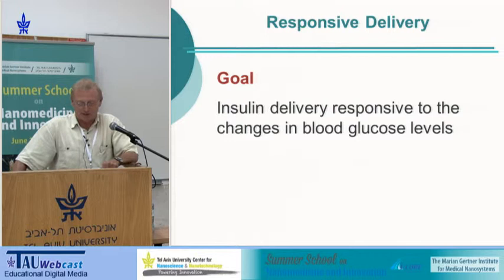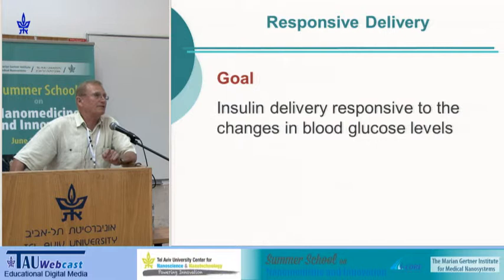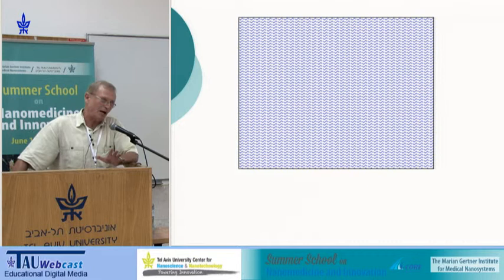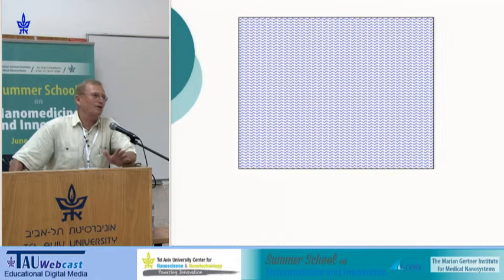I'll give one example of responsive delivery and then switch to the main focus, which is targeting. One example is delivery for diabetes, in which insulin is delivered in response to glucose concentration. When glucose concentration is high, we want to increase the release; when it's low, lower concentrations. I'll give a very brief overview of one approach.